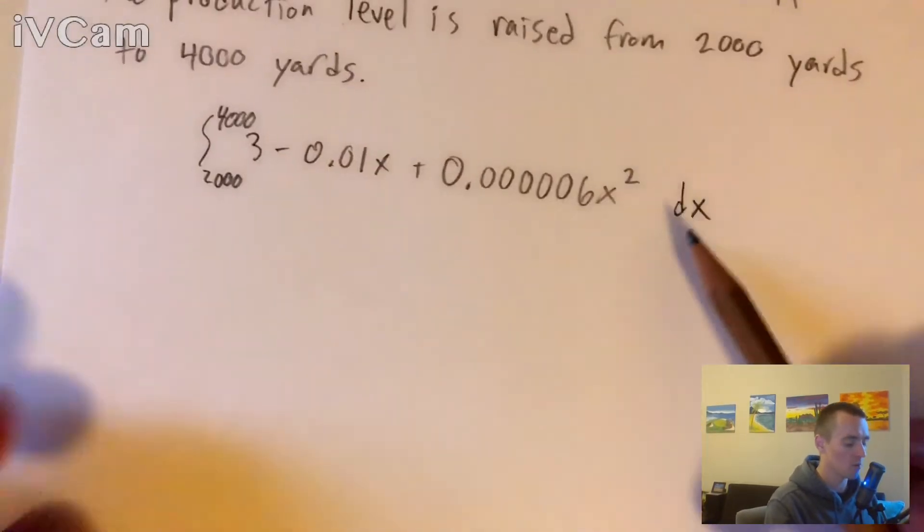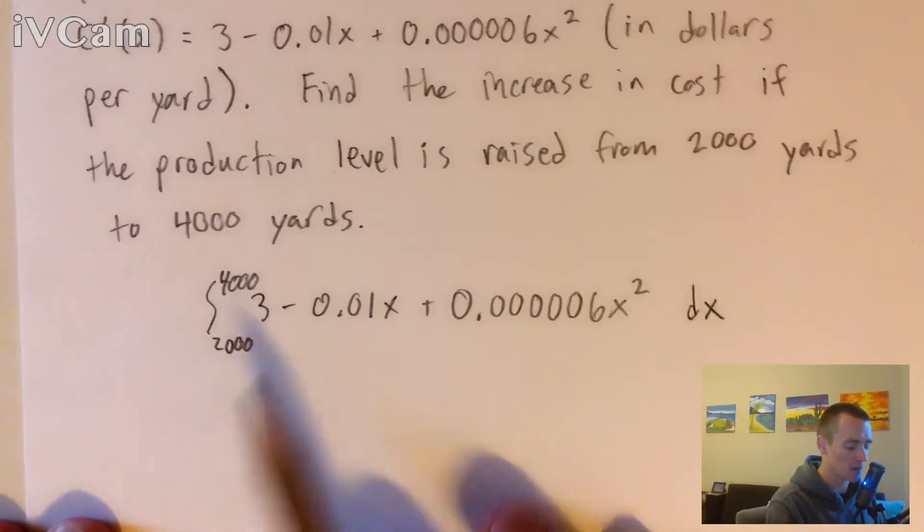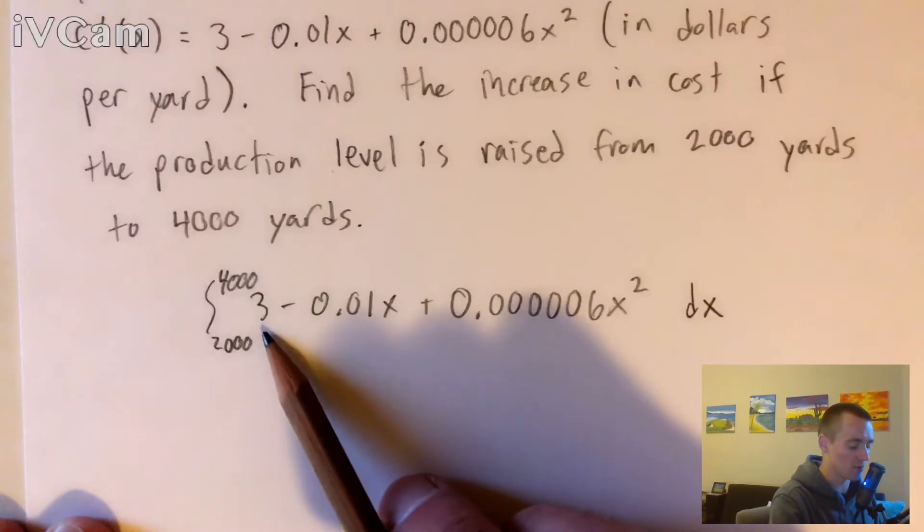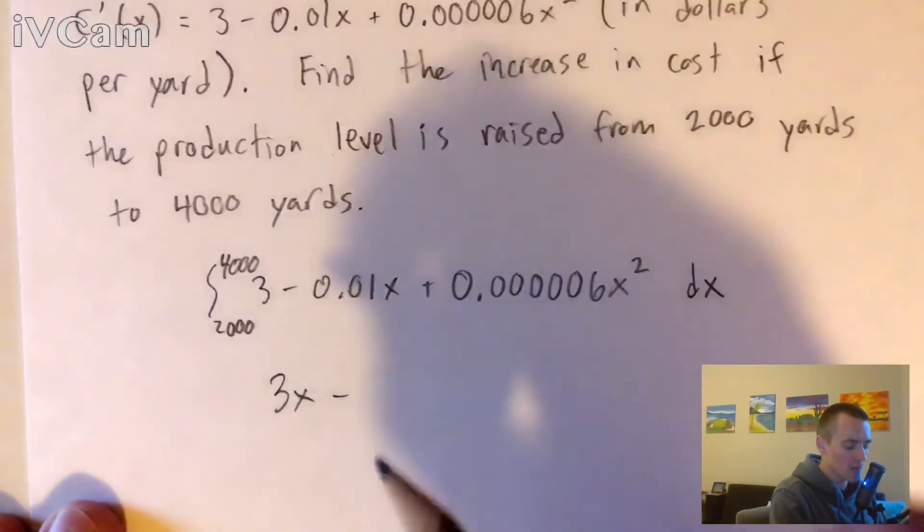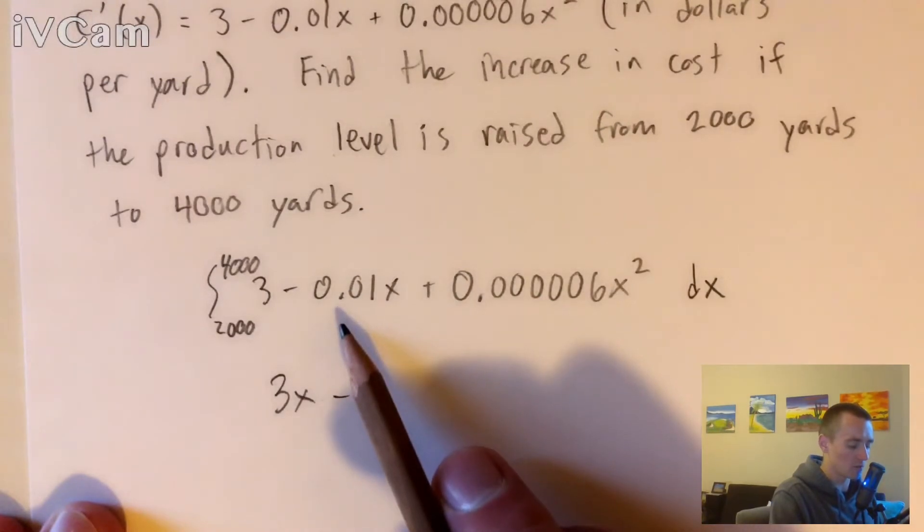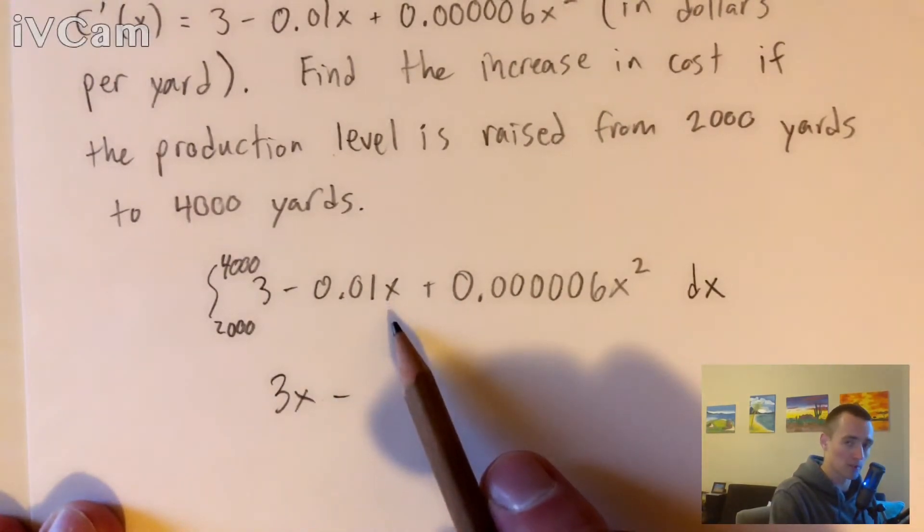The integration power rule basically says the anti-derivative of three is just going to be 3x, the anti-derivative of negative 0.01x. The power rule is going to be applicable here, which basically just tells us we need to raise our power. So our x is going to be raised up to the second power.